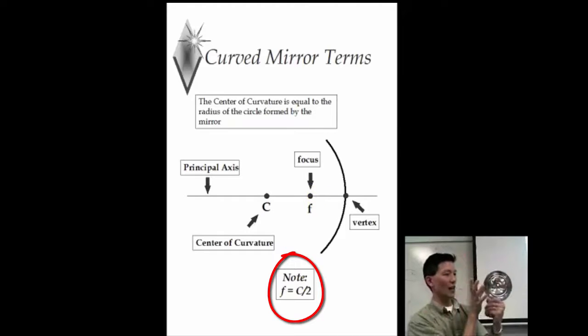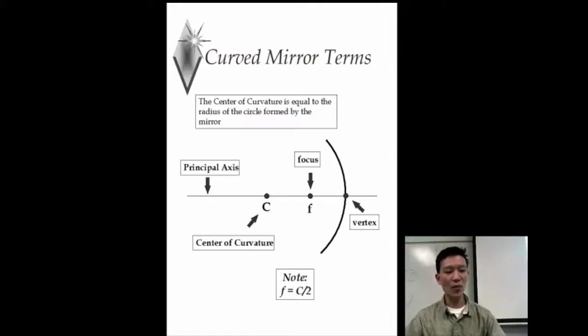So for example, let's say this circle had a center of curvature that's 30 centimeters, then what would the focal point be? It would just be half that, right? 15 centimeters. And the focal point is special because that's where it pulls the light together.